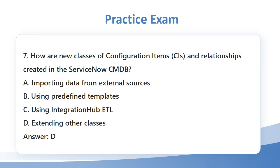Question 7: How are new classes of configuration items, CIs, and relationships created in the ServiceNow CMDB? a. Importing data from external sources. b. Using predefined templates. c. Using Integration Hub ETL. d. Extending other classes. Answer: D.